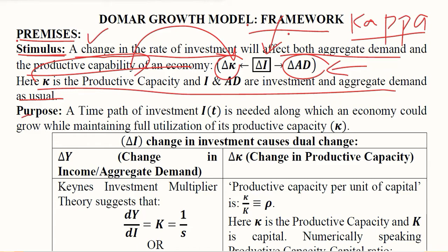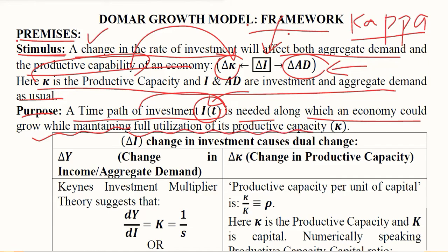The purpose of the Domar model is to develop a time path of investment — investment as a function of time — which is needed when we want the economy to be in equilibrium. In other words, we want the economy to grow while maintaining the full utilization of its productive capacity. Equilibrium can be achieved when we are fully able to utilize our resources or productive capacity. So the question is: what level of investment should be undertaken over time in order to retain this desirable situation of equilibrium?